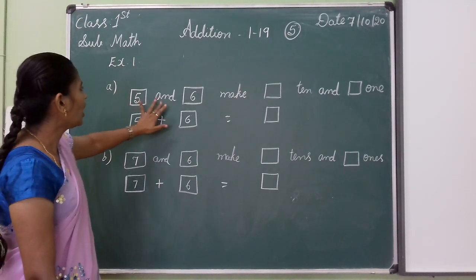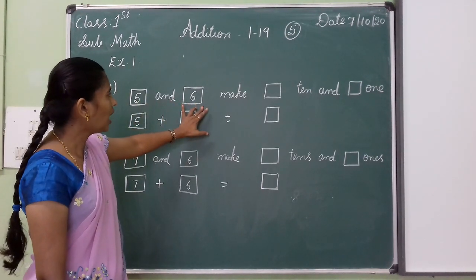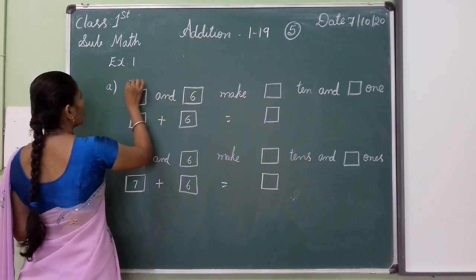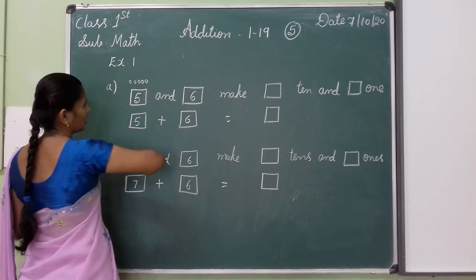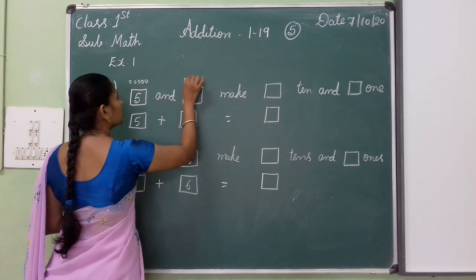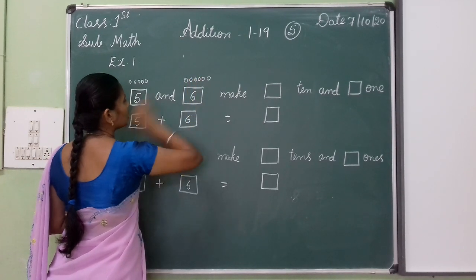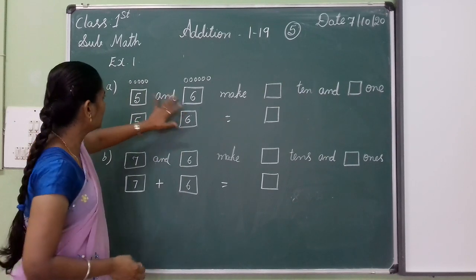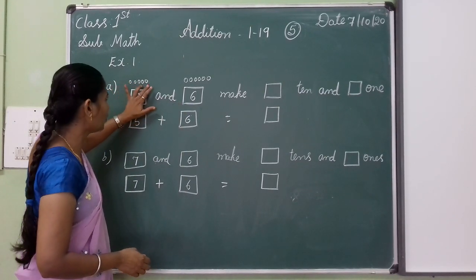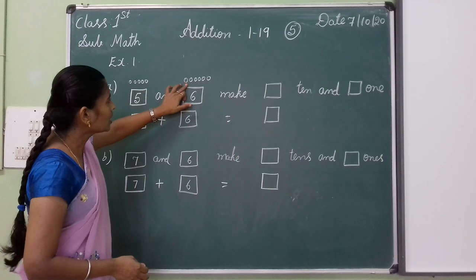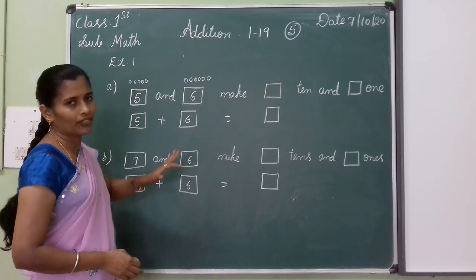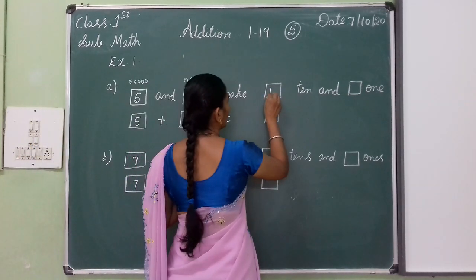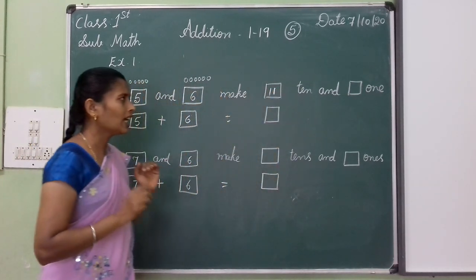So children, 5 and 6 circles — 5 and 6 makes how many? I put here 5 circles: 1, 2, 3, 4, 5. Then again I put 6: 1, 2, 3, 4, 5, 6. So if I add 2 numbers — 5 and 6 — I continue: 1, 2, 3, 4, 5, 6, 7, 8, 9, 10, 11. When I add 5 and 6 it becomes 11. So 11 is the answer.